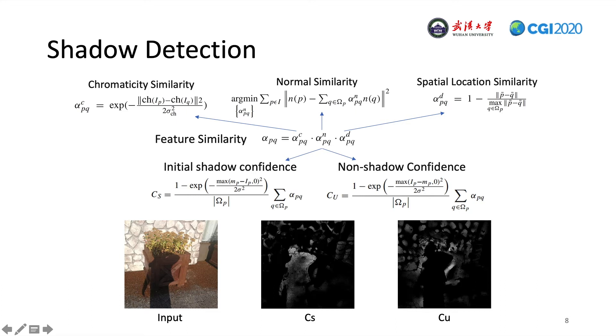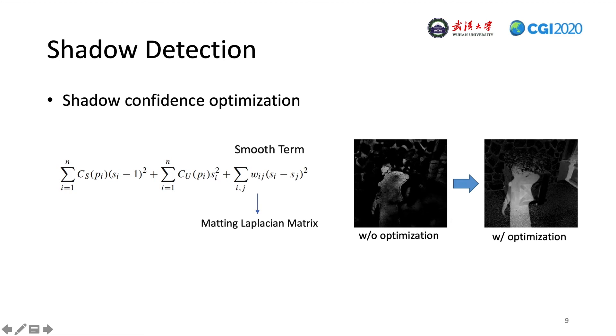In order to enhance the estimation of the shadow, we apply a structure-aware confidence propagation to interpolate the confidence around the boundary to other regions. We get a more comprehensive shadow confidence map. The shadow confidence of pixel i is then obtained by minimizing this function. The first term encourages pixels with large shadow confidence to get a large value, which is close to 1.